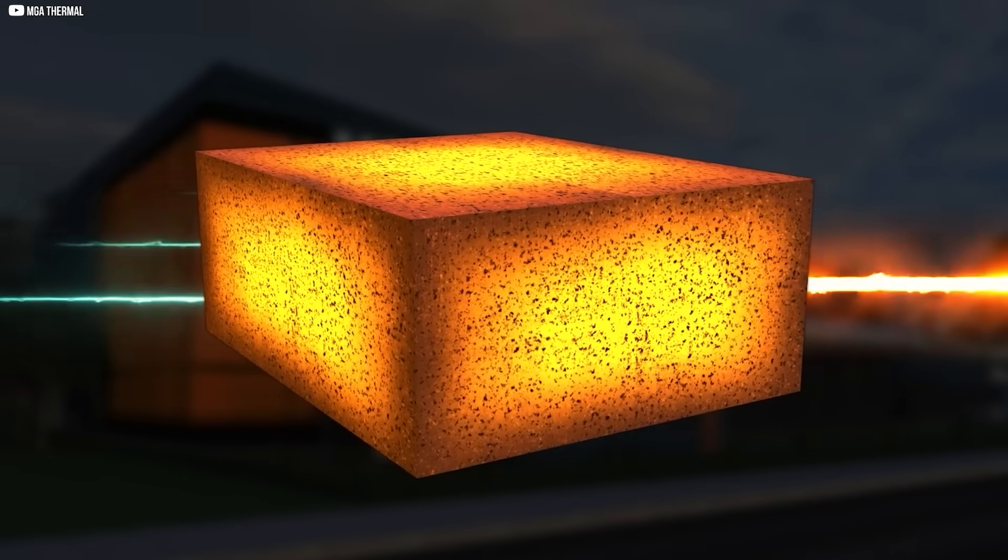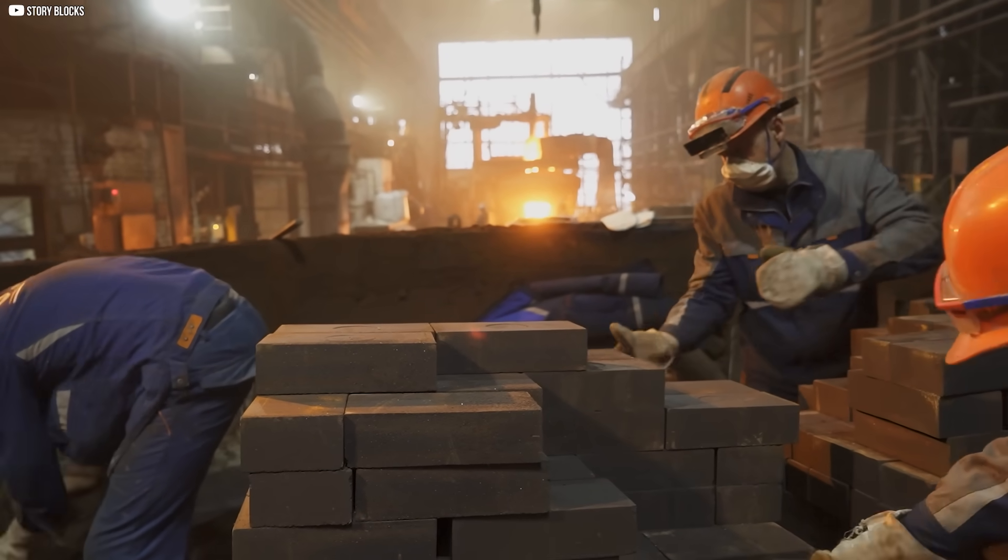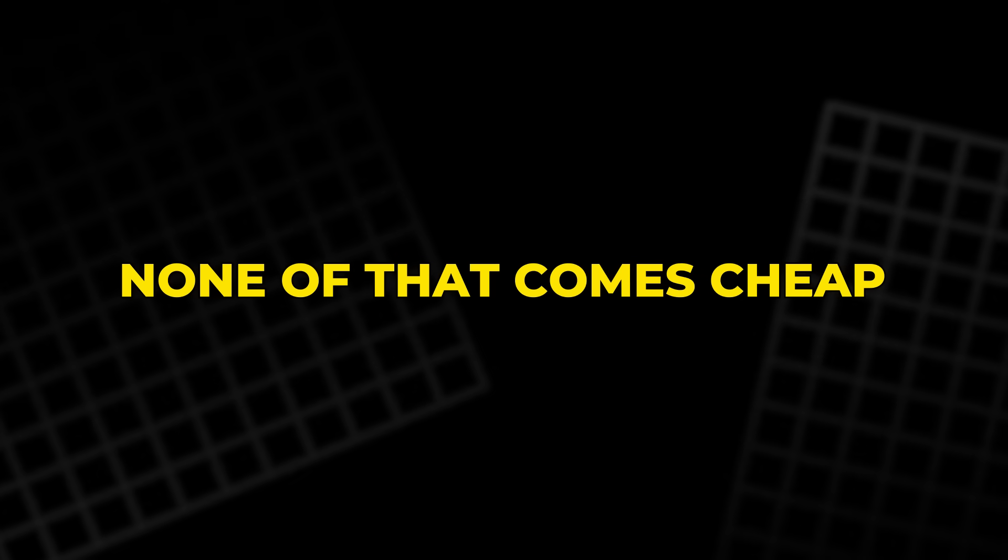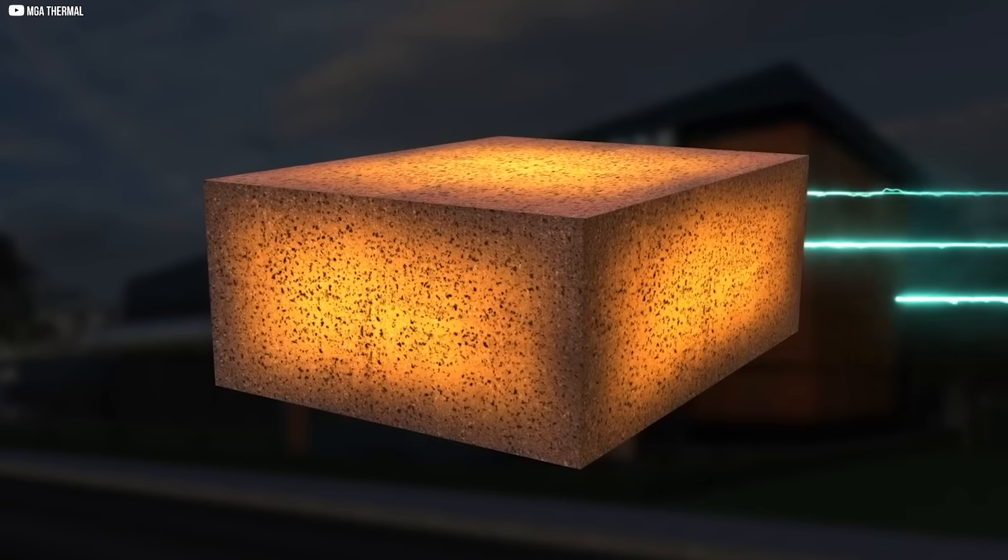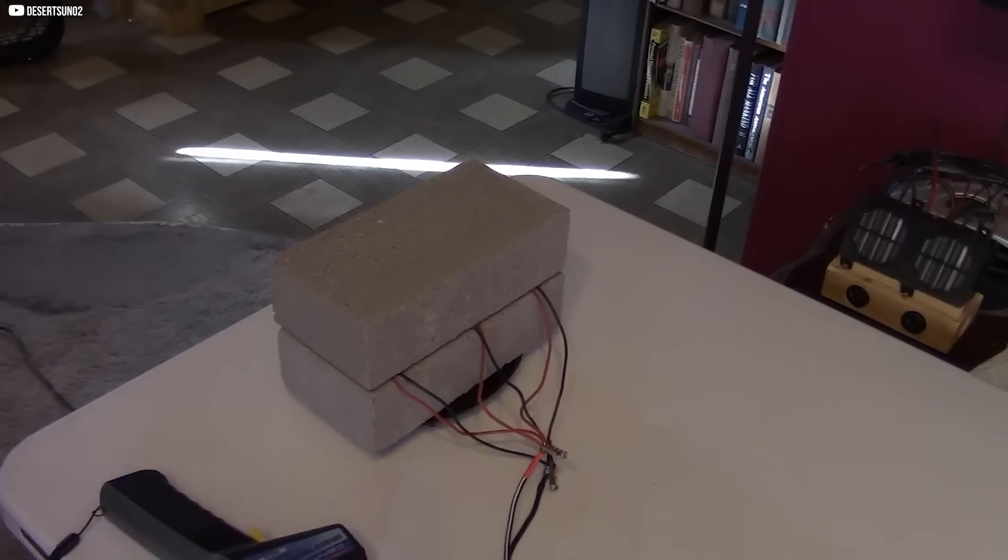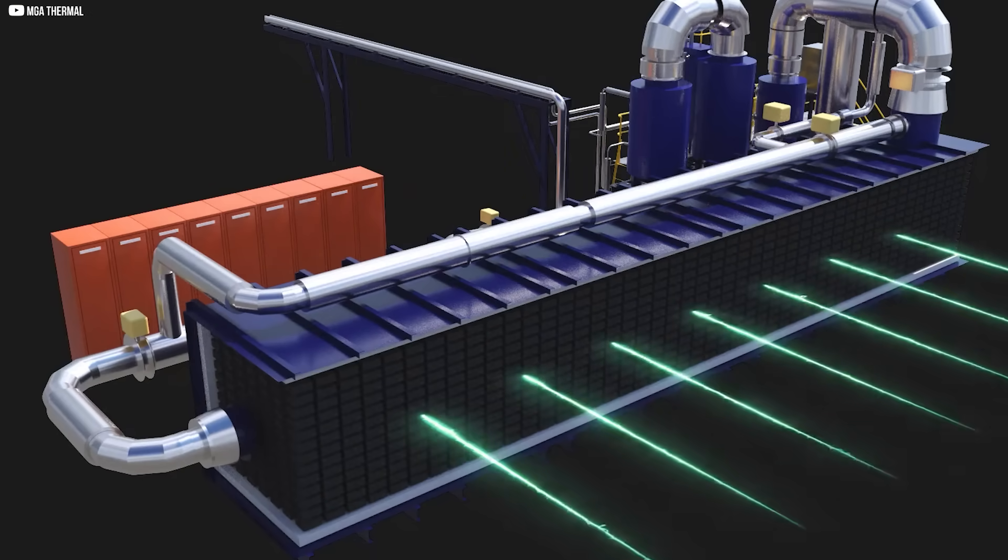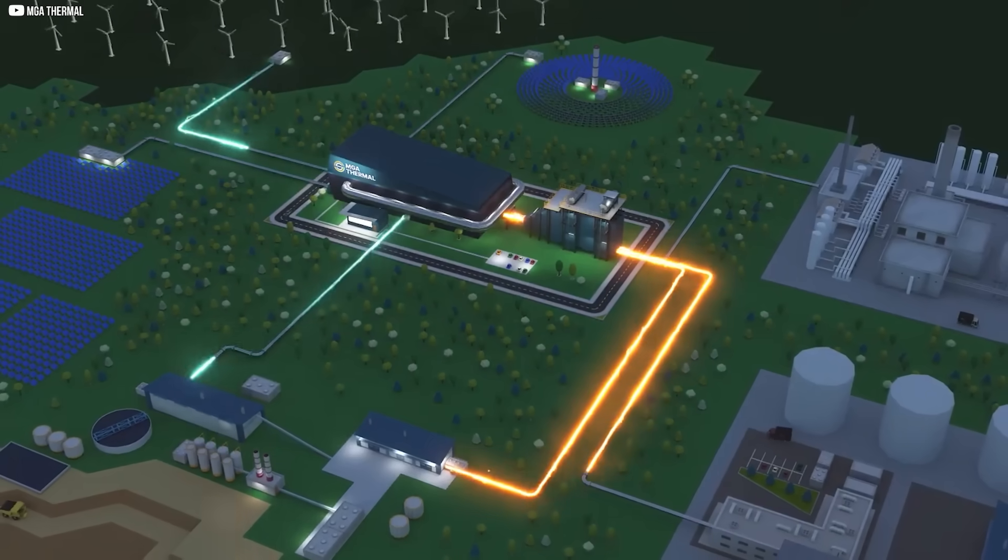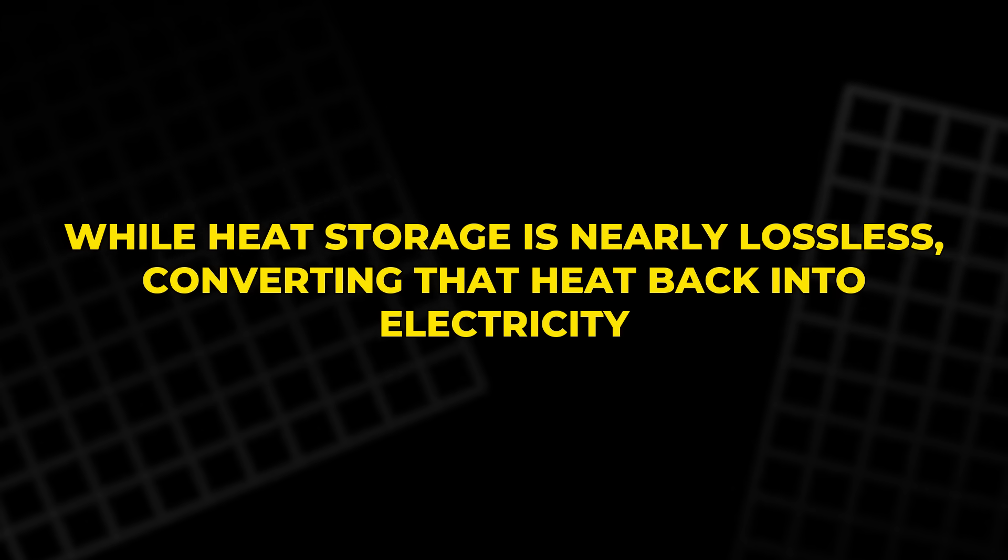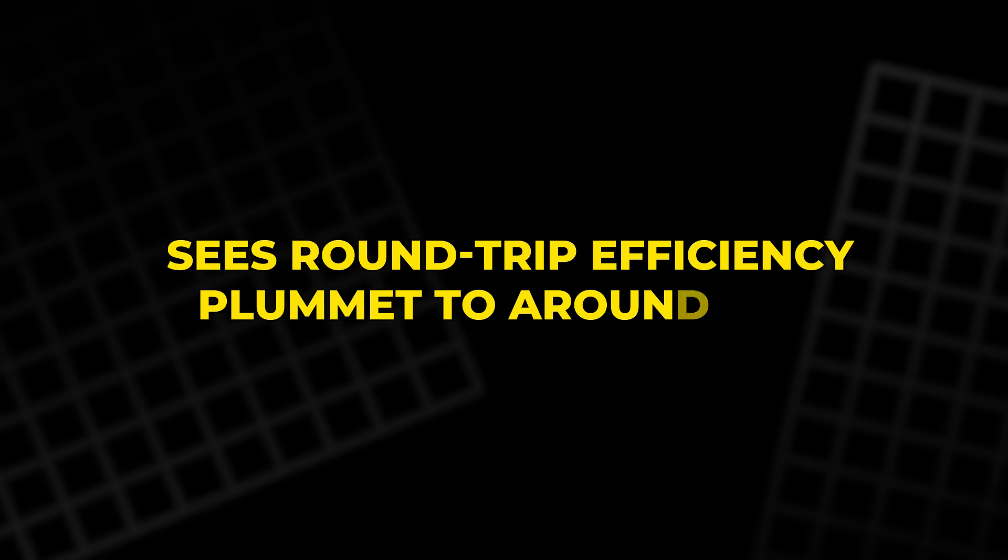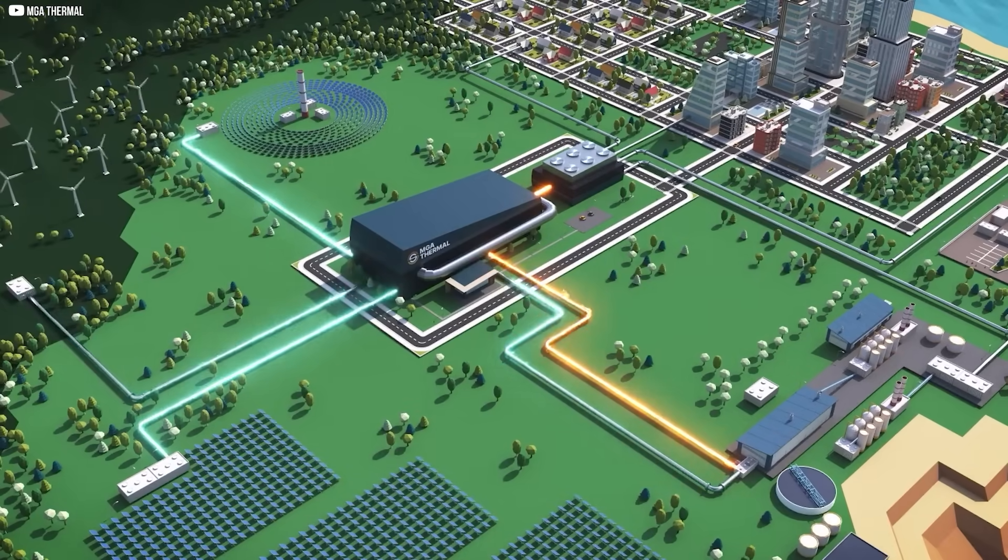And then there's the question of cost. The materials in MGA's blocks aren't exotic, but the engineering is. High thermal conductivity, repeatable phase changes, and structural stability. None of that comes cheap. MGA claims its system can out-compete gas boilers in terms of the levelized cost of heat. But margins are tight. A different set of assumptions, a shift in energy prices, and the math might not favor them. Even efficiency has its limits. While heat storage is nearly lossless, converting that heat back into electricity sees round-trip efficiency plummet to around 35%. Great for heat. Less so for power.